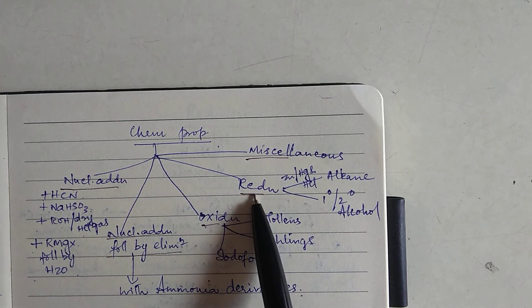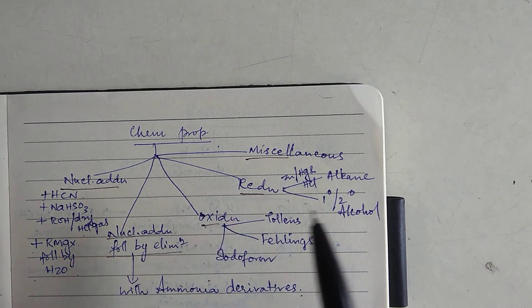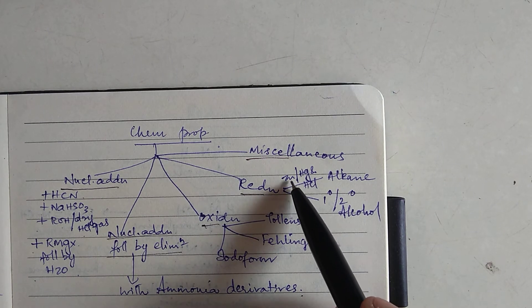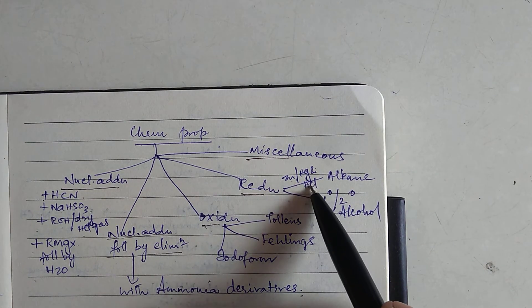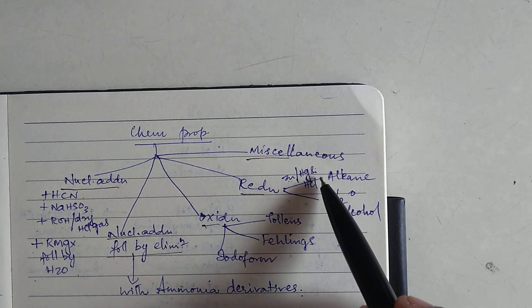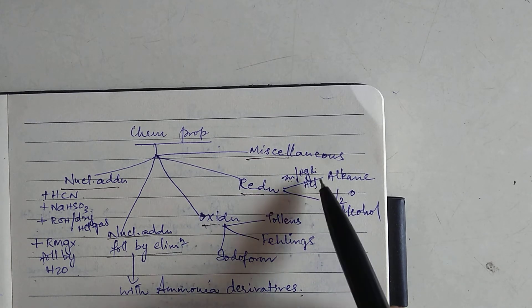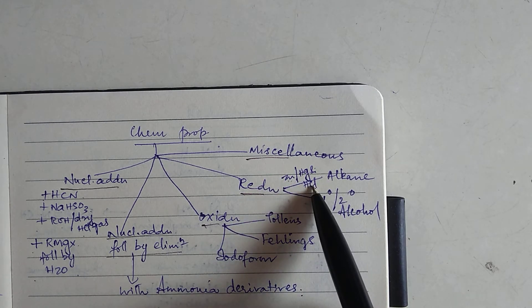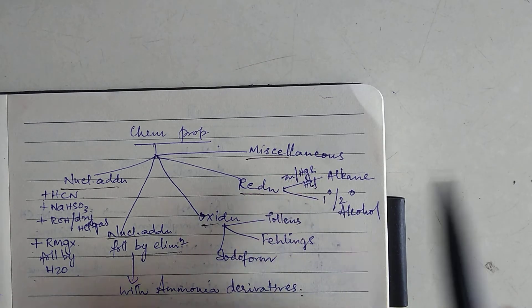Under reduction, again you have two types of reduction processes taking place. One is in the presence of zinc amalgam and HCL. Zinc bar Hg means zinc amalgam and concentrated HCL. This is one type of reduction. This is called as Clemensin reduction.